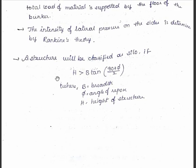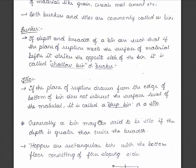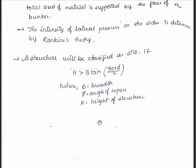A structure is classified as a silo if h is greater than b·tan(90 + φ/2), where φ is the angle of repose, b is the breadth of the bin, and h is the height. If this condition is satisfied, the bin is called a silo; if h is less than or equal to that value, it is called a bunker. In the next video, we shall see the design guidelines for a cylindrical bunker.